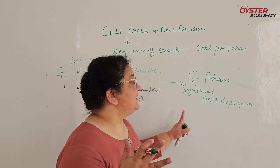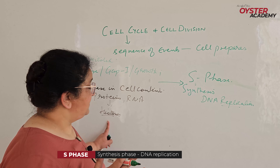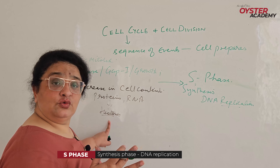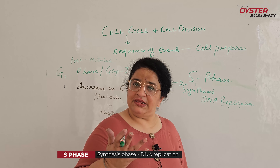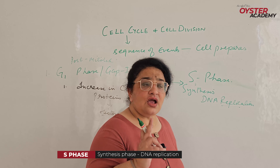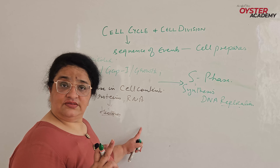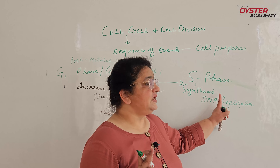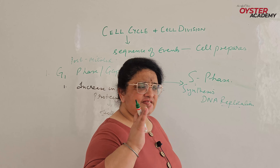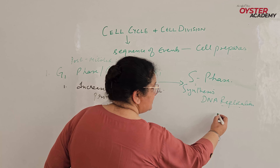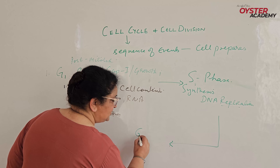G1 is a post-mitotic phase — it occurs just after mitosis. What happens in this post-mitotic Gap 1 phase? The cells are small — nucleus is small, cytoplasm is small. So now the cell needs to increase its content. It grows in size, and this increase in cell content is what happens in G1.